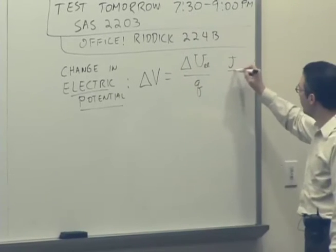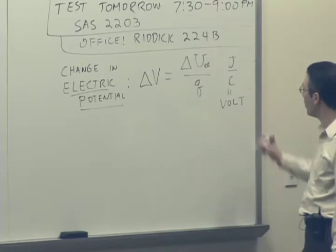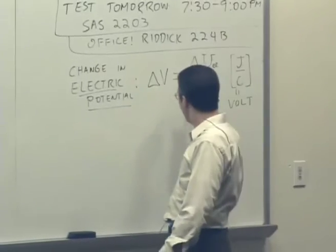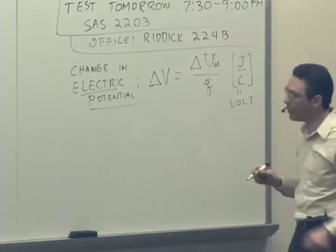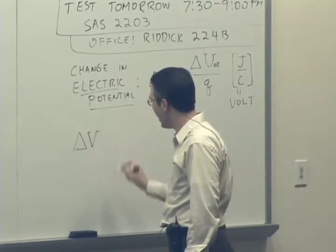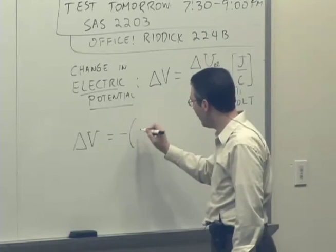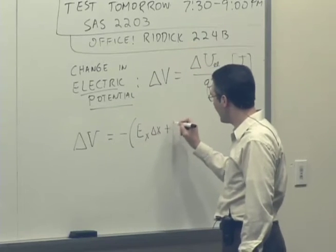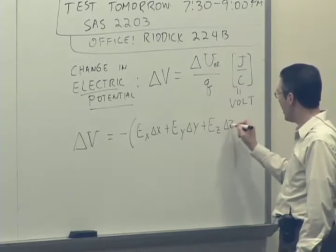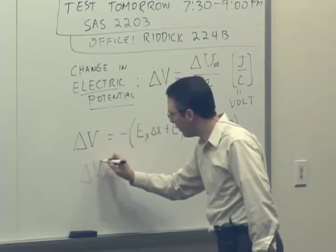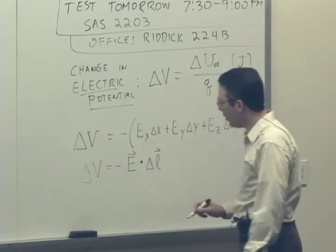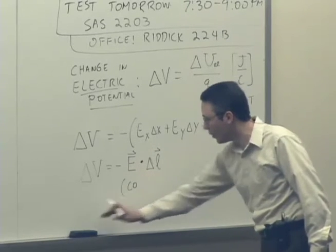The change in electric potential, symbol delta V, is equal to delta U — the change in potential energy — divided by the charge. We have units of joules per coulomb, or volts; one volt is one joule per coulomb. Using this, we found that a relationship between the change in electric potential and the electric field is: delta V equals negative of (E_x·delta_x + E_y·delta_y + E_z·delta_z), or more compactly, the negative of the electric field dot product with delta L. This is for the case of a constant or uniform electric field.